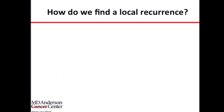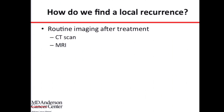How do we find a local recurrence? There are two broad categories. One is routine imaging — the patient has surgery or ablation, we tell them to come back in six months with CT scans or MRIs, and we see something. This is typically in a patient with no symptoms, found only because we're doing routine imaging as dictated by our guidelines.